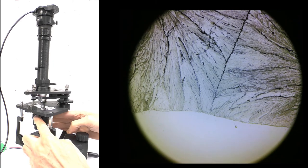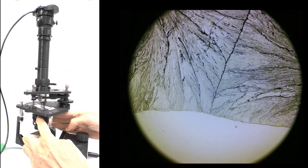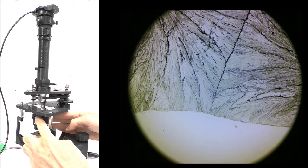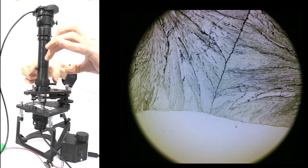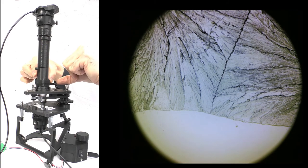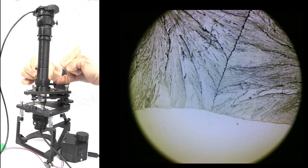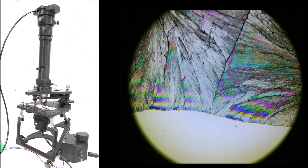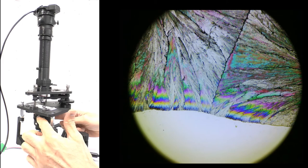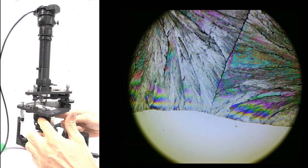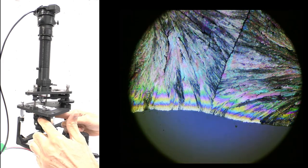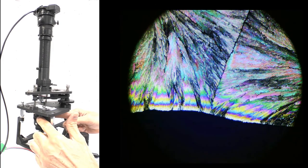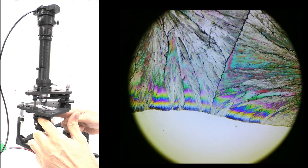So now I'll rotate the polarizer without an analyzer in position. And there are some subtle changes in appearance of the crystal, but we can't see any colors. So now I'll insert the analyzer on its own. And immediately we can see the colors appearing. And as we rotate the polarizer, the background fades to almost complete extinction. And the colors cycle.